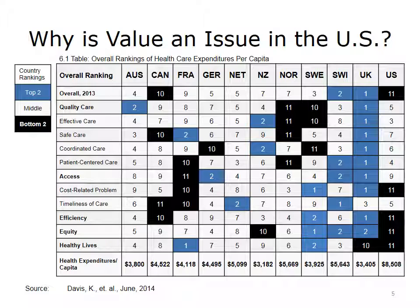Value in health care is of particular concern in the U.S. When compared to other countries, the U.S. pays too much and gets too little. According to a table developed by the Commonwealth Fund based on 2013 international health care data, the U.S. has an overall rank of 11th, but per capita health expenditures much higher than other countries included in the rankings. Norway has the highest per capita expenditure among the other 10 countries listed, but per capita expenditures in the U.S. are fully 50 percent higher than Norway's.